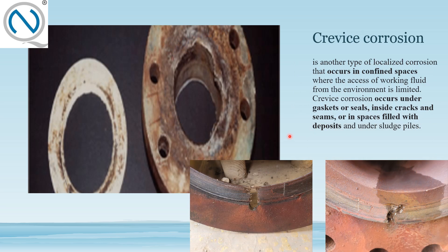Next is crevice corrosion, which is also a common question in the Level 3 exam. A key tip: if a question mentions gaskets or seals, there is a very high probability the answer is crevice corrosion. Crevice corrosion is a type of localized corrosion that occurs in confined spaces where access of the working fluid from the environment is limited. It occurs under gaskets or seals, inside cracks and seams, in spaces filled with deposits, and under submerged piles. Whenever you hear crevice corrosion, remember gaskets or seals.